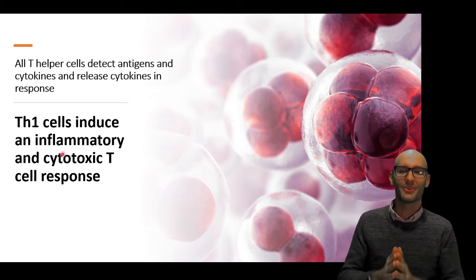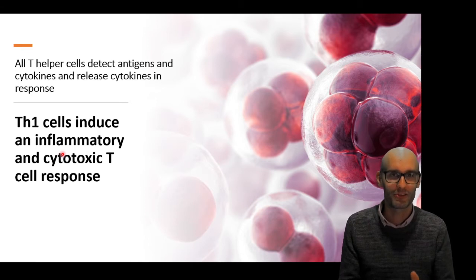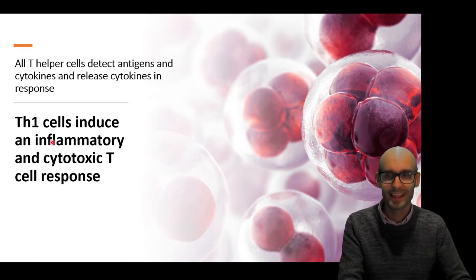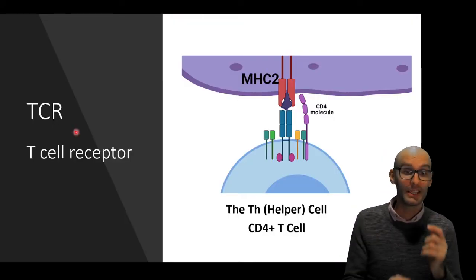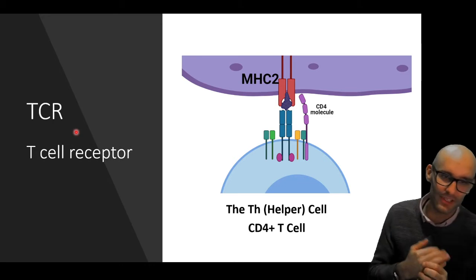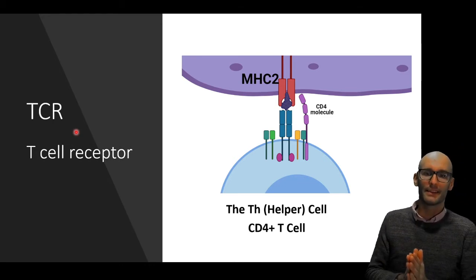And we've got Th1 cells that produce an inflammatory response as well in the innate immune system. So let's have a look. How do we get this response? How do we create a Th1 cell?